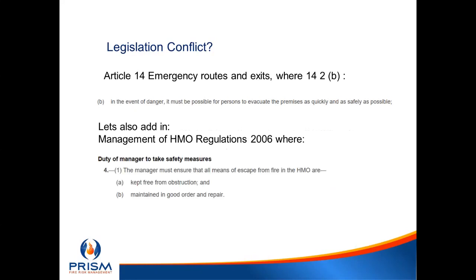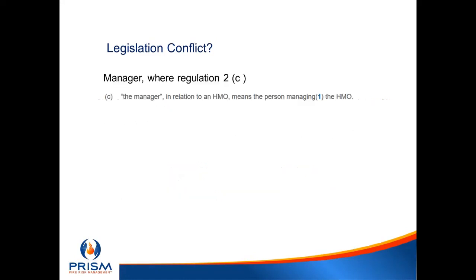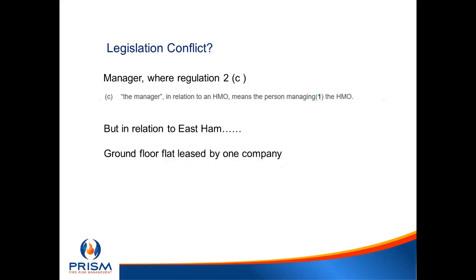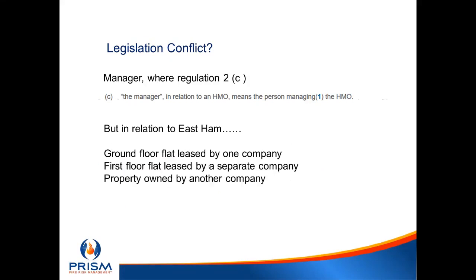However, because the responsible person is also responsible for common areas, they also have a duty under Article 5.2 of the Fire Safety Order. The responsible person must ensure duties are imposed under Articles 8 to 22. Article 14 — about emergency and exit routes — states that in the event of danger it must be possible for persons to evacuate the premises as quickly and safely as possible. Adding in the HMO Management Regulations, the manager must ensure all means of escape are maintained.